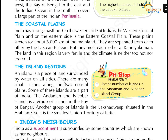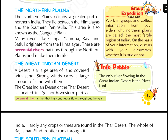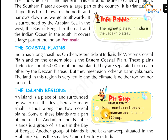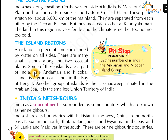There are many small islands along the two coastal plains — western and eastern coastal plains which we have studied. These are also islands. One example is the group of islands in the Bay of Bengal. Another group of islands is the Lakshadweep Islands, situated in the Arabian Sea. It is the smallest Union Territory of India.